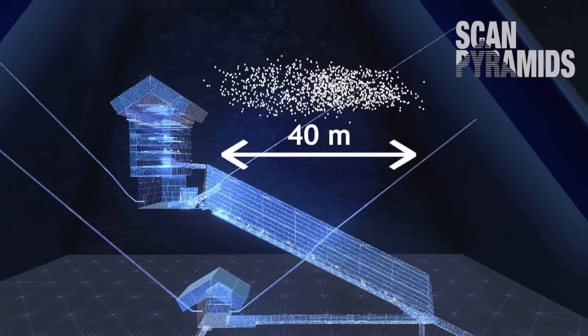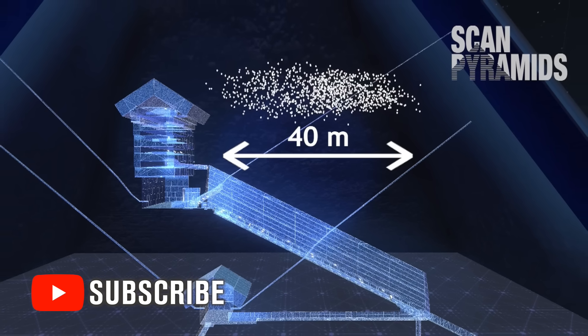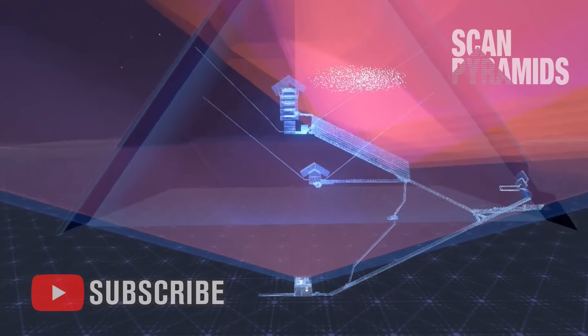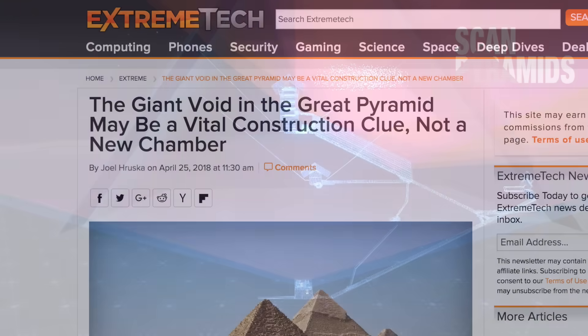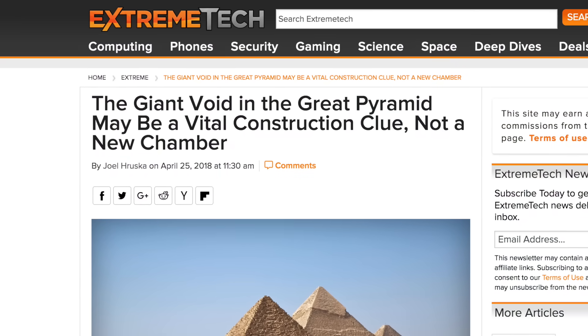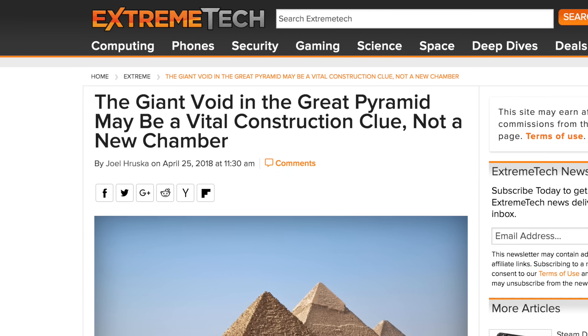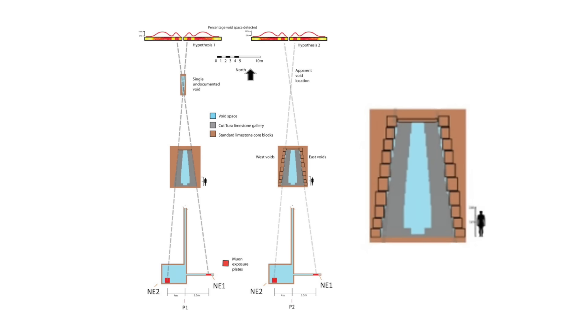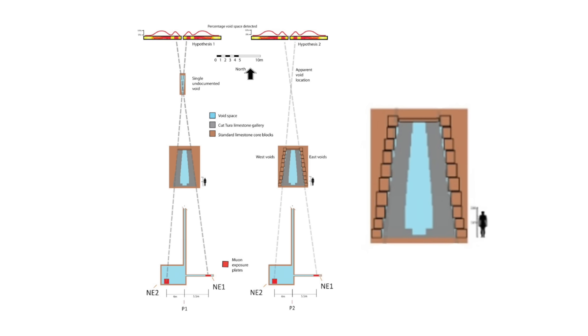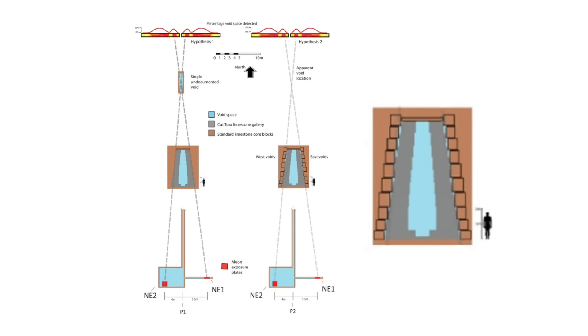Some people believe the big void is Khufu's antechambers, some think it's merely constructional, some think it's a burial chamber with an iron throne, but some Egyptologists such as Dr. David Lightbody are even convinced there are no voids at all and say there is actually an alternative explanation. Lightbody believes the voids are merely artifacts of the scans, picking up small cavities around the masonry of the Grand Gallery.